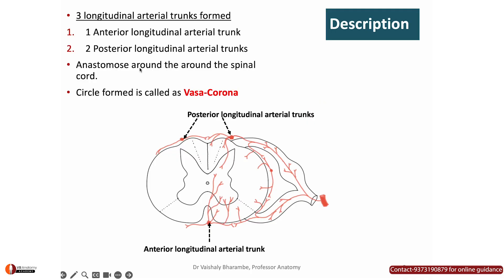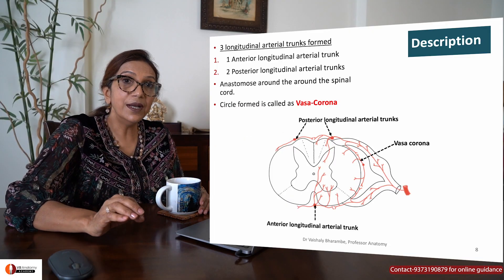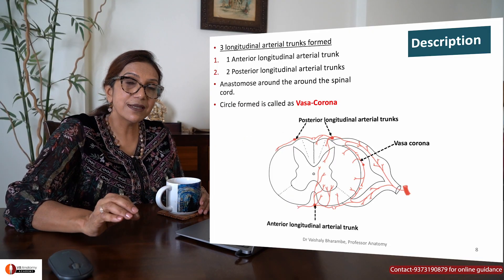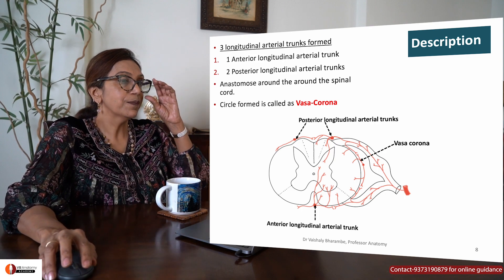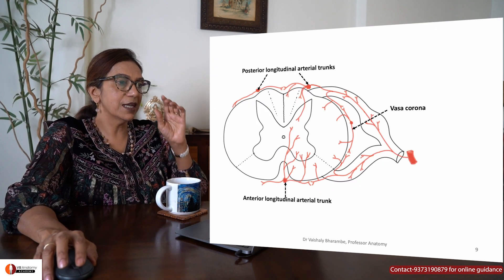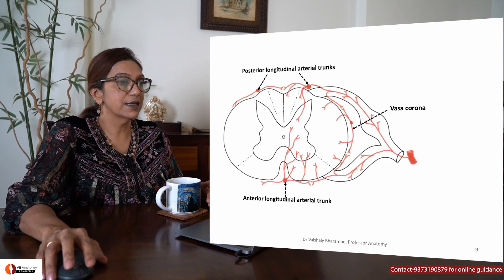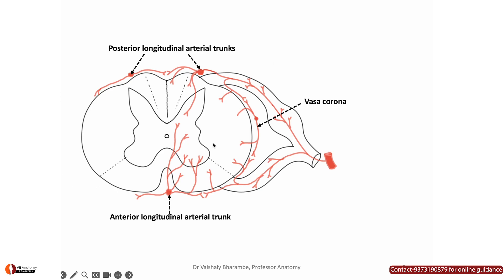Branches of these trunks anastomose around the spinal cord, resulting in a circle of arterial anastomosis called the vasa corona. However, the vasa corona and three longitudinal arterial trunks cannot supply the spinal cord on their own.